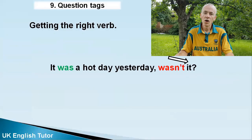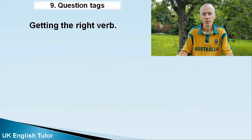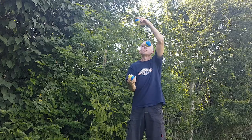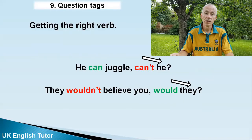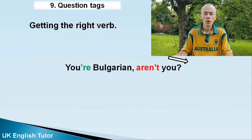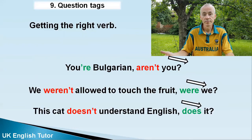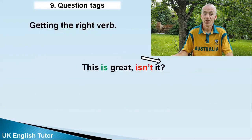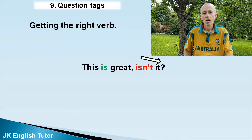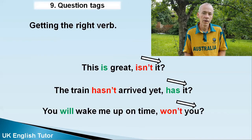'It was a hot day yesterday, wasn't it?' 'She shouldn't eat the crocodile, should she?' 'You've been to the moon, haven't you?' 'He can juggle, can't he?' 'They wouldn't believe you, would they?' 'You couldn't help me, could you?' 'You're Bulgarian, aren't you?' 'We weren't allowed to touch the fruit, were we?' 'This cat doesn't understand English, does it?' 'This is great, isn't it?' 'The train hasn't arrived yet, has it?'